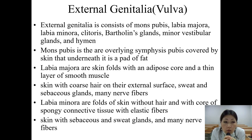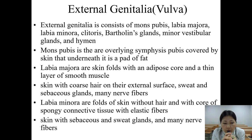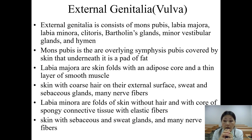The external genitalia, or vulva, consists of the mons pubis, labia majora, labia minora, clitoris, Bartholin's glands, minor vestibular glands, and hymen. The mons pubis overlies the symphysis pubis and is covered by skin with a pad of fat underneath. The labia majora are skin folds with an adipose core and a thin layer of smooth muscle; the skin has coarse hair on the external surface, with sweat and sebaceous glands, and many nerve fibers are present.